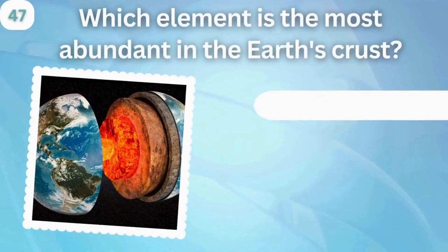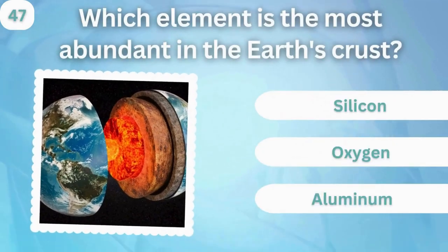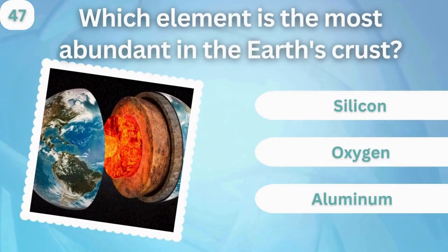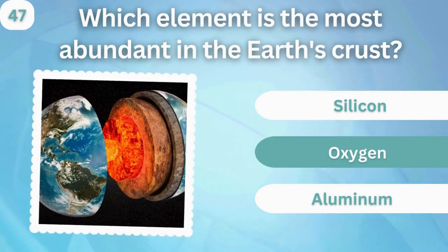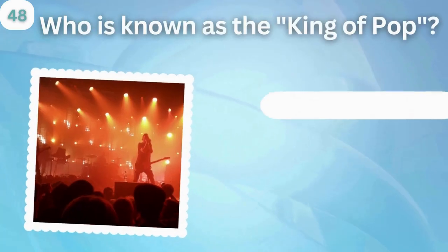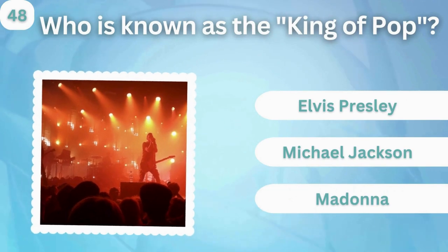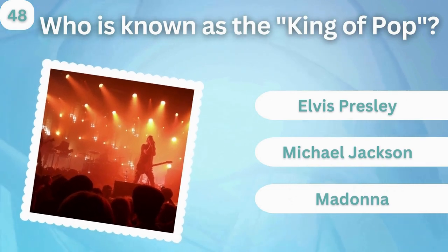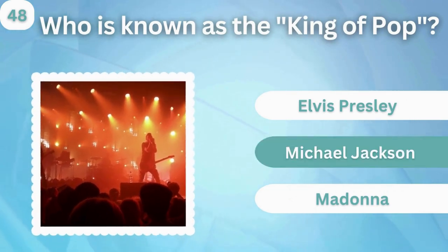Which element is the most abundant in the Earth's crust? Silicon, oxygen, or aluminum? Oxygen. Who is known as the King of Pop? Elvis Presley, Michael Jackson, or Madonna? Michael Jackson.